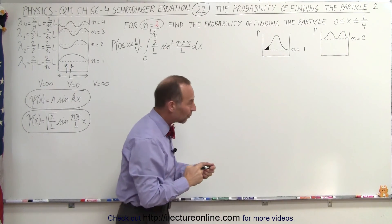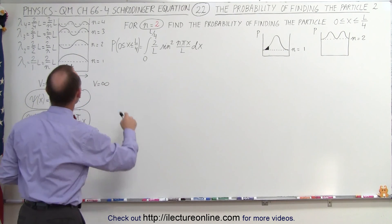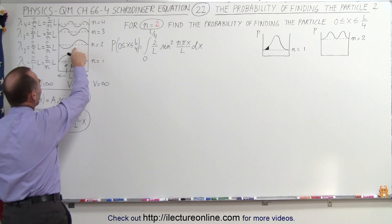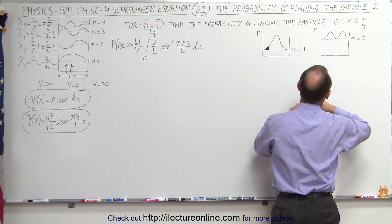What we're going to do now is the same thing but for the energy level n equals 2. Notice our wave function now looks different and we calculate the probability function. The probability function looks like this.